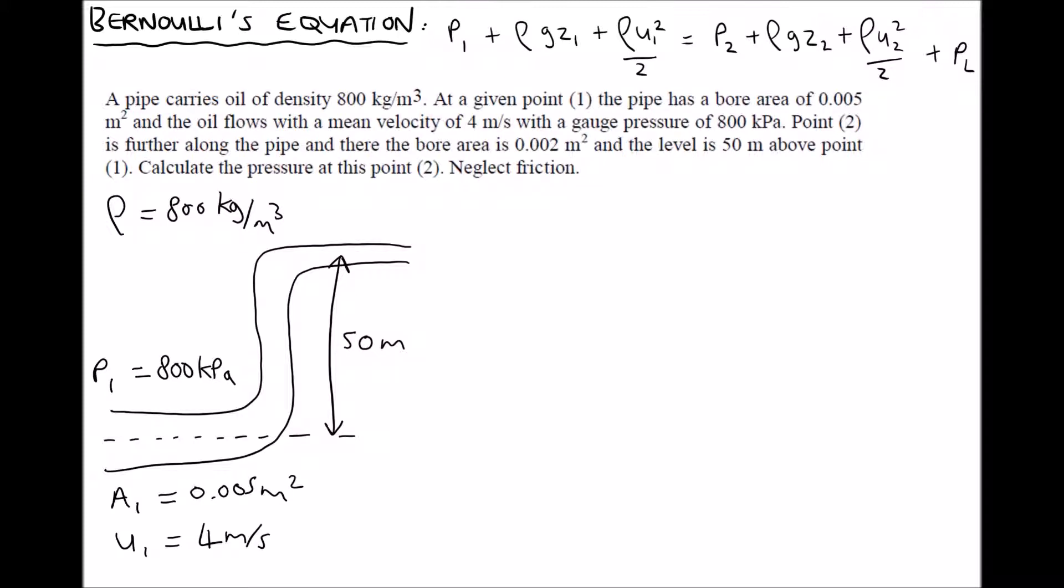It gives us some information about position 2. It tells us that the area at position 2 is 0.002 meters squared. But it doesn't give us any further information. It doesn't tell us the pressure at point 2 because that's what it wants us to calculate. And it doesn't tell us the velocity at point 2. The other thing that it tells us is that we can neglect friction. It tells us that right at the end of the question there.